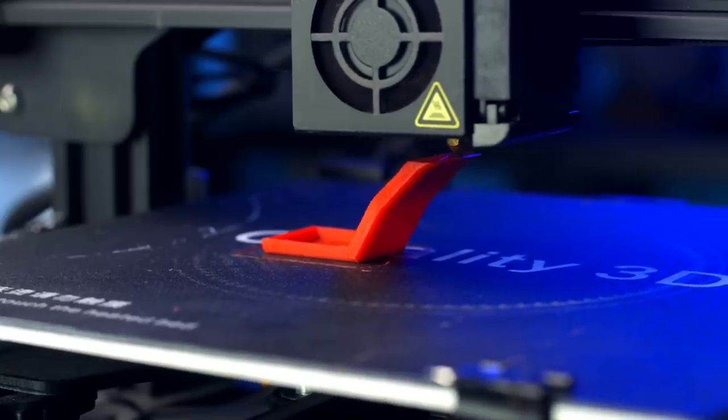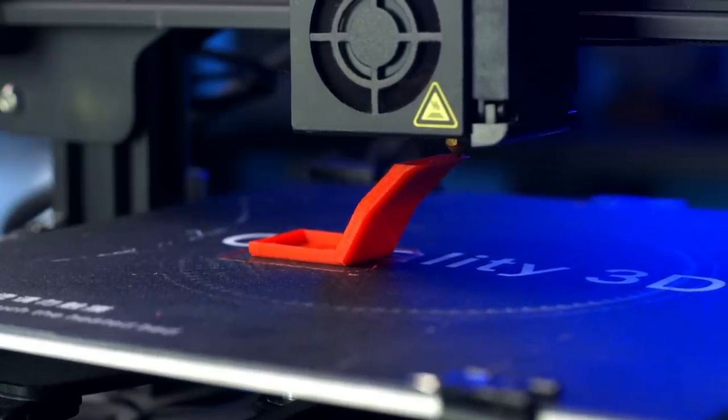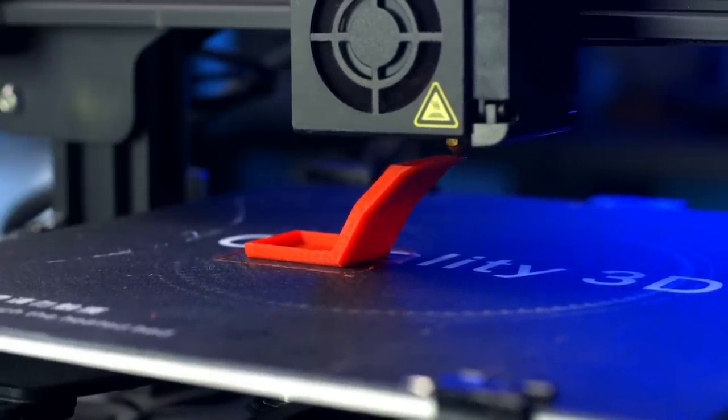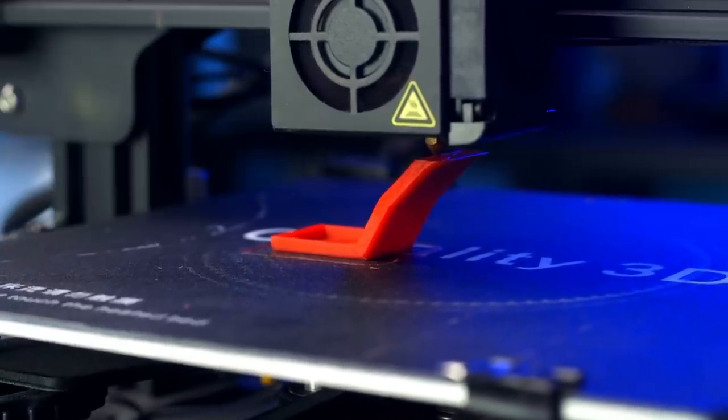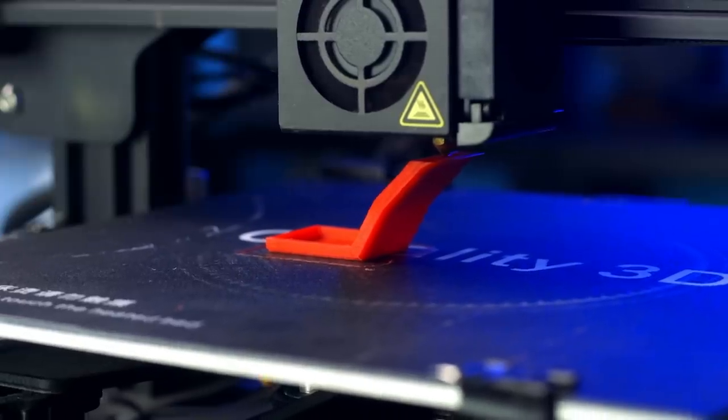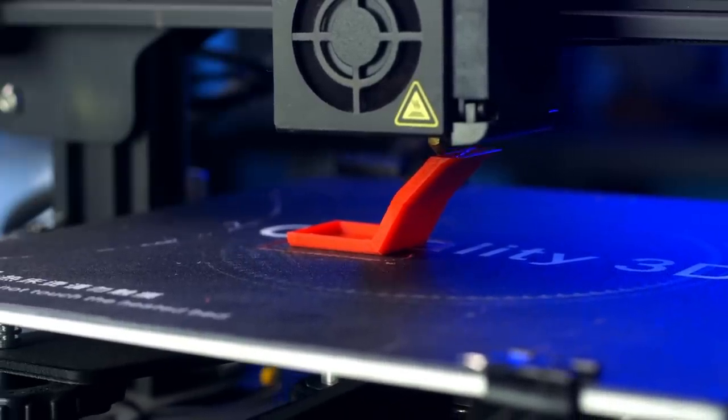Now when you're printing this, your print speeds will affect it. If you're printing very slow, like 10 millimeters per second, you'll probably get a better score than if you print this at 80 millimeters per second. Just because there's more time for the air to cool down the molten plastic.